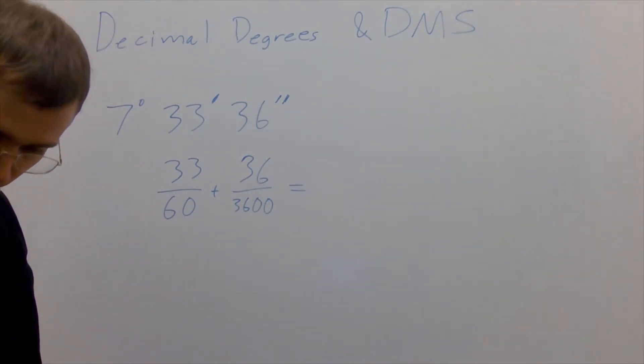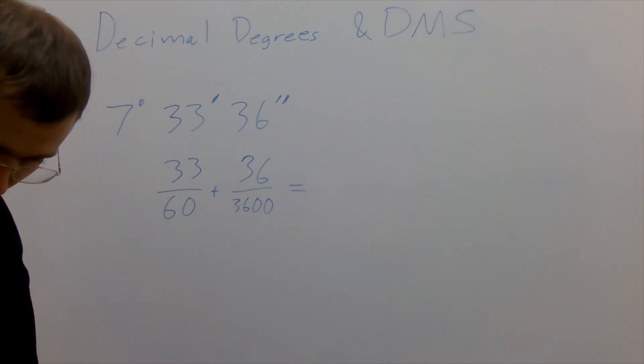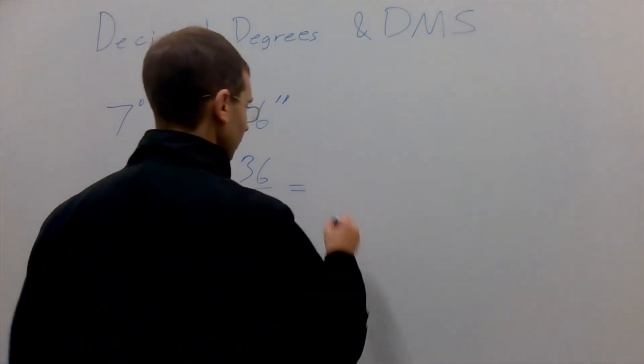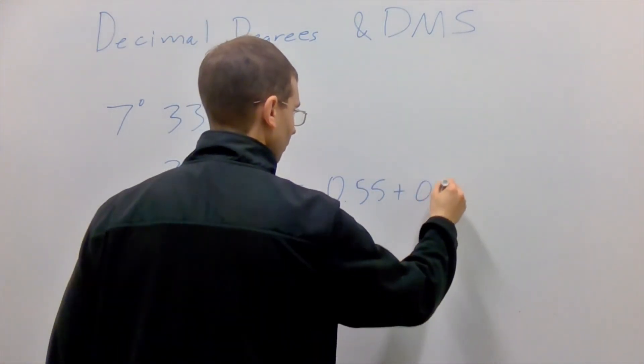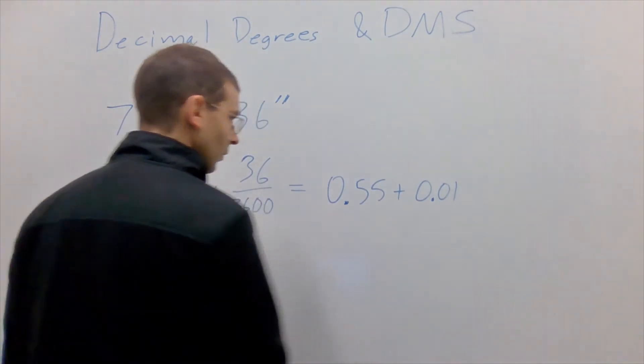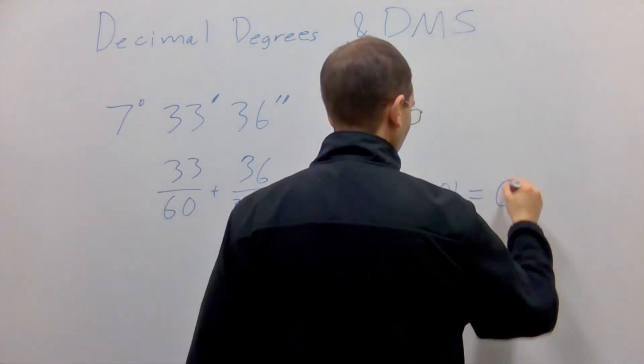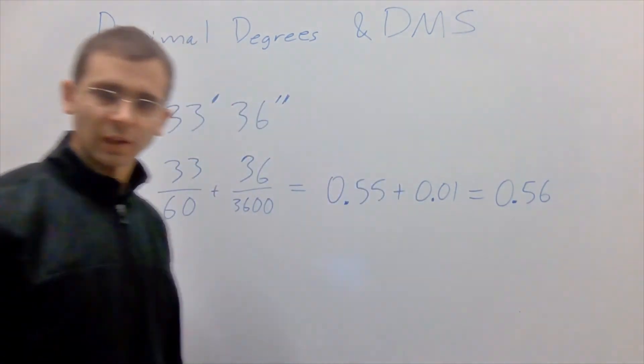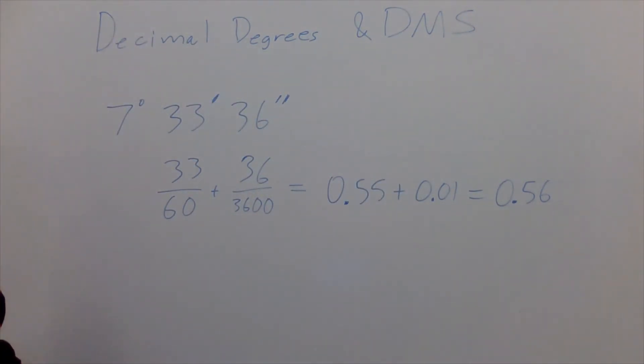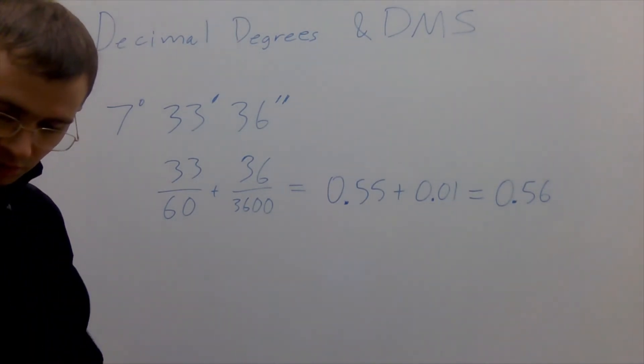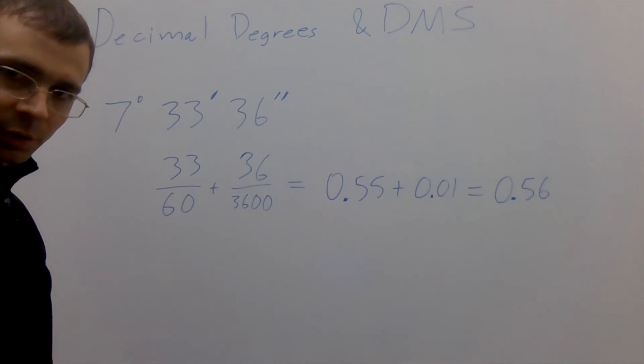The decimal portion of this will be simply a decimal representation of this number here. So if I do that quickly on my calculator, which comes out to be .56, 56 one-hundredths of a degree. Let's now use the functionality built into our calculators and see if we get the same answer.